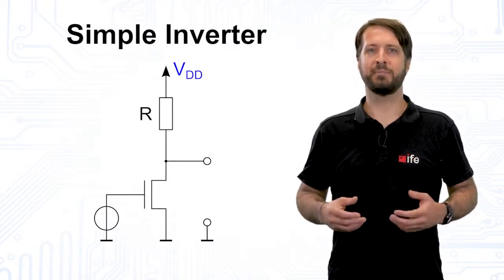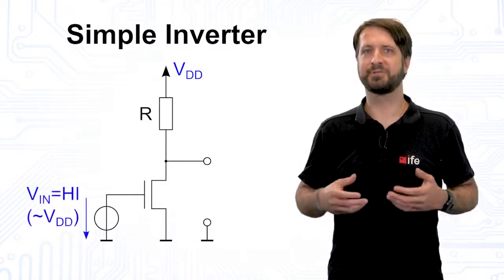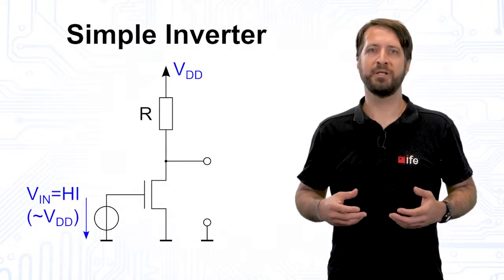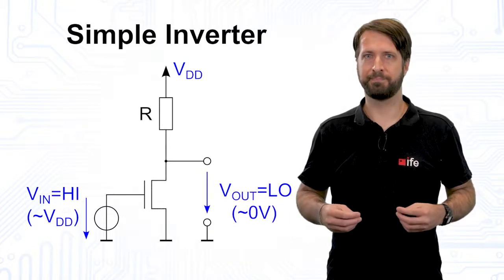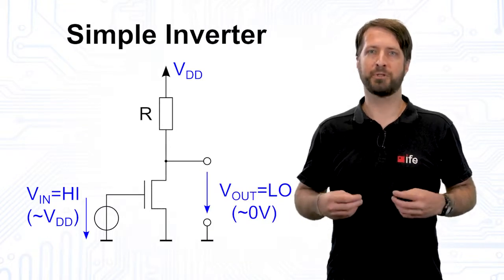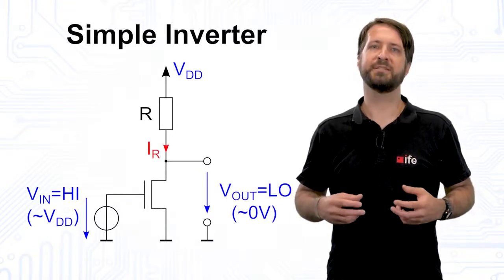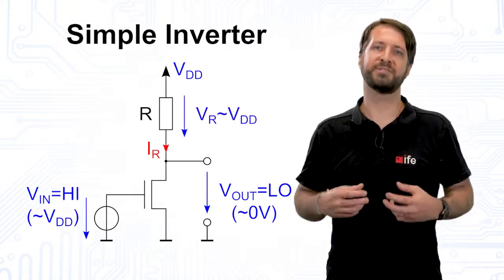If the input level at the NMOS is high, said NMOS transistor will switch on and will pull the output potential to ground, or low level. The supply voltage will cause a current to flow through the resistor, resulting in losses.